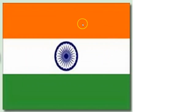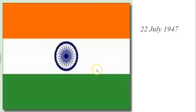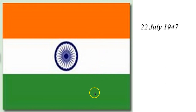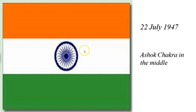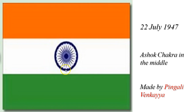And the last one — this is our today's flag. It was accepted on 22 July 1947. The same colors were kept in it, and it was called Ashok Chakra. It was designed by Pingali Venkayya. This was a little information about its history.